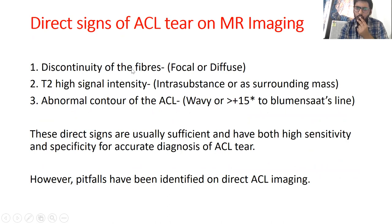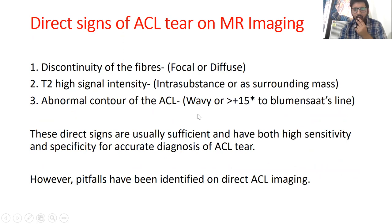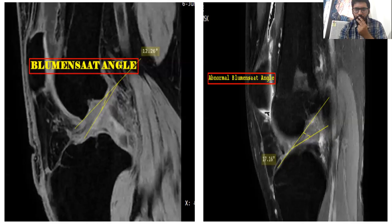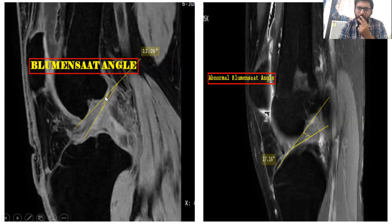The direct signs of ACL tear are discontinuity of the fibers (which can be focal or diffuse), T2 high signal intensity either intrasubstance or as a surrounding mass, and an abnormal contour of the ACL — either wavy or making a more than 15-degree angle to the Blumensatz line. These direct signs are usually sufficient and have both high sensitivity and specificity for accurate diagnosis. The Blumensatz angle is formed between a line along the roof of the intercondylar notch of the femur and a line along the posterior fibers of the ACL. An abnormal Blumensatz angle — where the tip of the triangle points downward and the angle is more than 15 degrees — is an indicator of ACL tear.